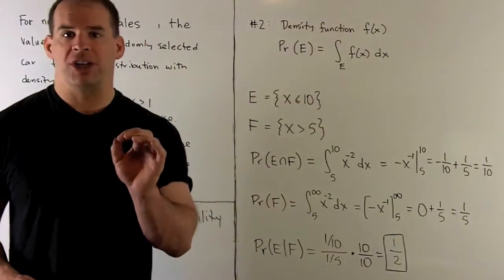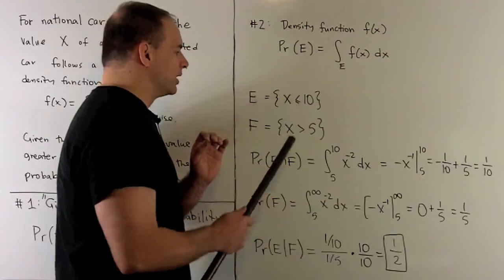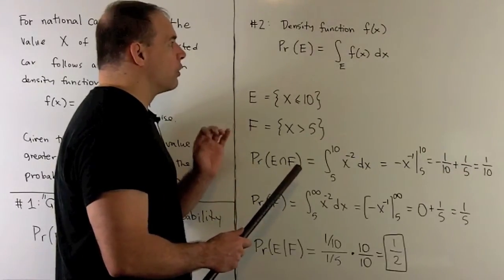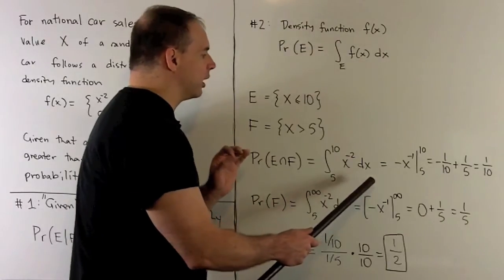So if I want the probability of the intersection, we're just gonna take greater than 5, less than or equal to 10, and then we're gonna integrate over our density function. So I'm gonna compute this definite integral right here.